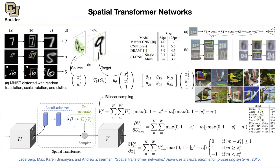Can we swap the bilinear sampling with another interpolation? Of course. This is just the easiest approach. There is another one where you just copy the nearby pixels. So yes, the interpolation method can be swapped out.